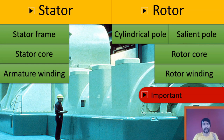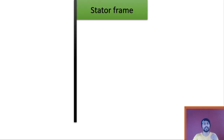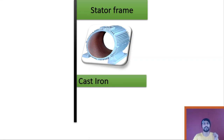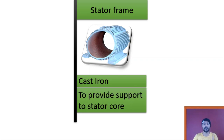Now let's jump into the stator. As we discussed, the stator has mainly three parts. The first is the stator frame, which looks like this. The stator frame is basically made up of cast iron material. The function of the stator frame is to provide support to the stator core.